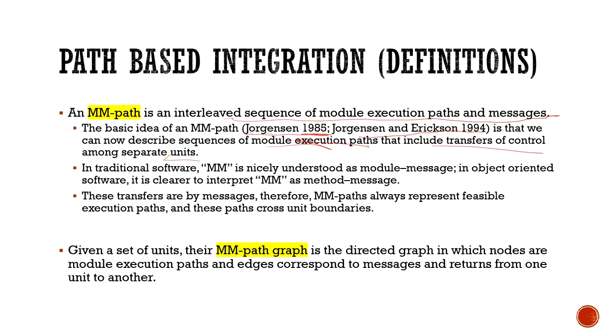In traditional source code, MM-path is understood as module-message. In object-oriented software, it is clearer to interpret MM-path as method-message. So if you talk about object-oriented code, you say method-message, and if you talk about sequential language, you say module-message. These transfers by messages, therefore, MM-paths always represent feasible execution paths, and these paths cross unit boundaries.